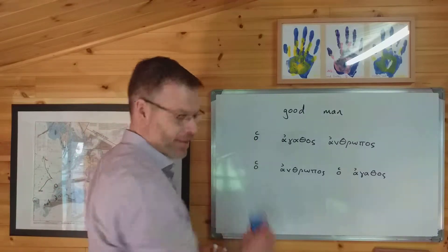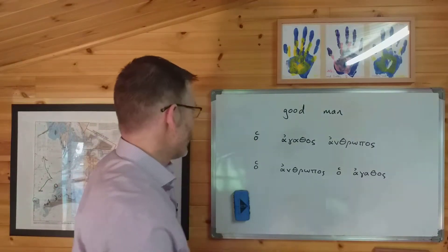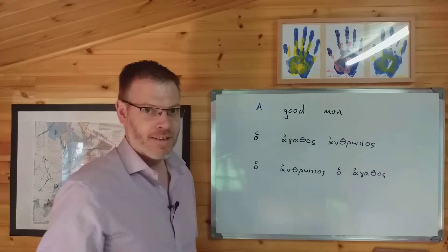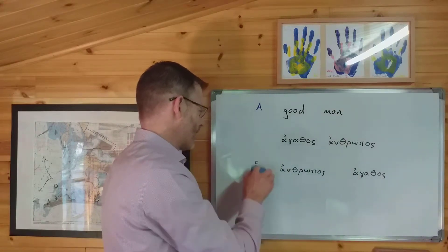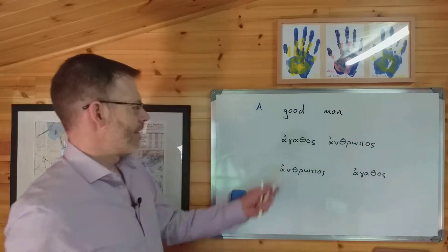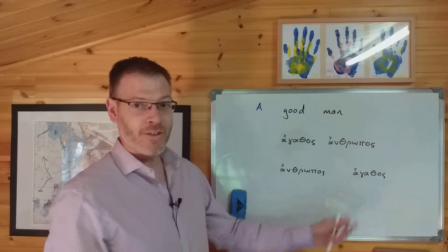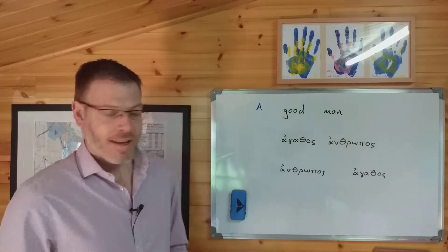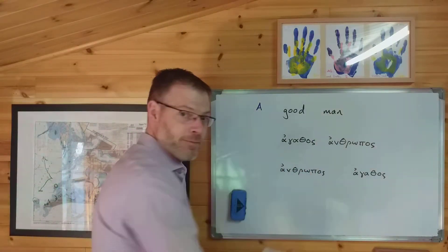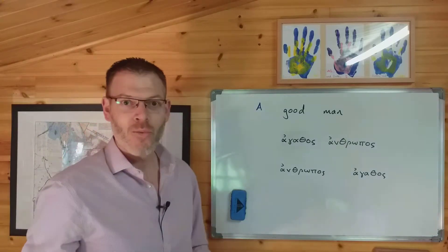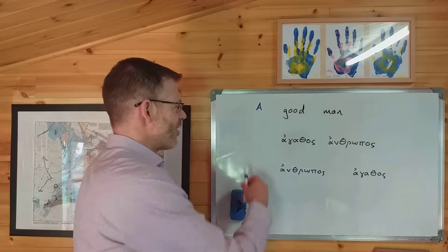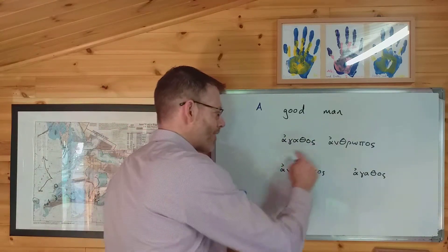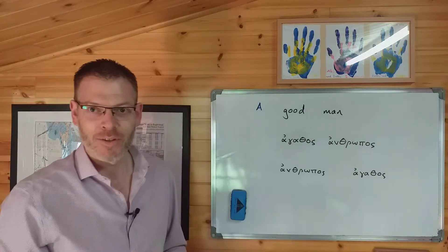So how do you write it if, instead of wanting to write 'the good man,' you want to write simply 'a good man'? The answer — I hope this is obvious — is 'a good man' or 'a man good.' Very simple, really is as simple as that. Notice that the word order can be either way round, and notice also what we recognised before: there is no indefinite article in Greek.